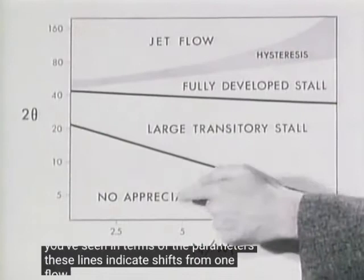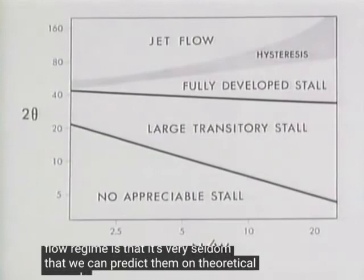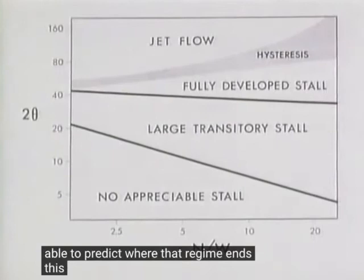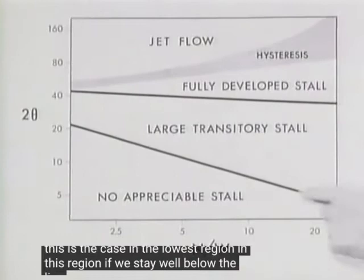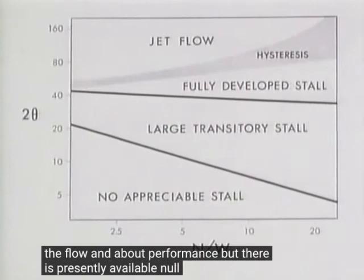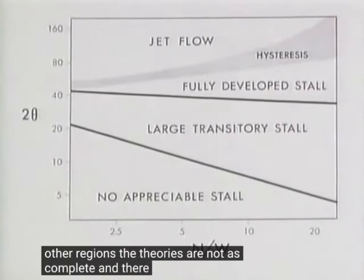One point that needs emphasis is that it's very seldom that we can predict shifts in flow regime on theoretical grounds alone. Even when we have a good flow model and a sound theory within a given regime, we may not be able to predict where that regime ends. In the lowest region, staying well below the line of first stall, we can use Prandtl's potential theory boundary layer model to make accurate predictions. But presently there is no theory that will predict the transition line, nor the hysteresis region in the higher regions of the chart.